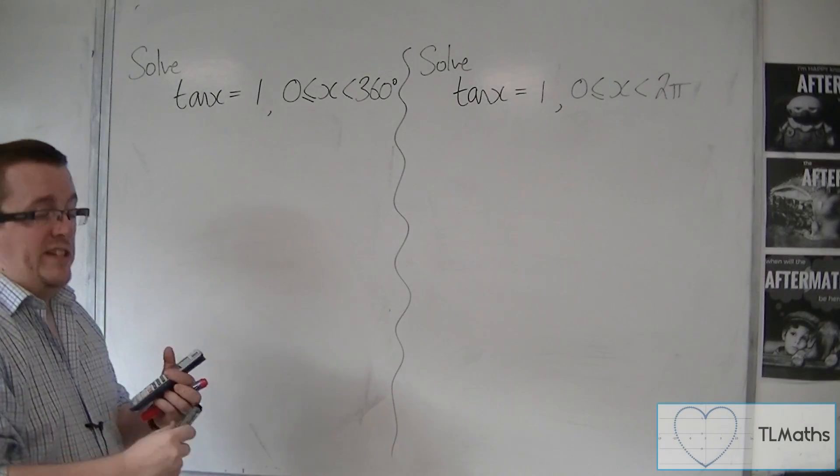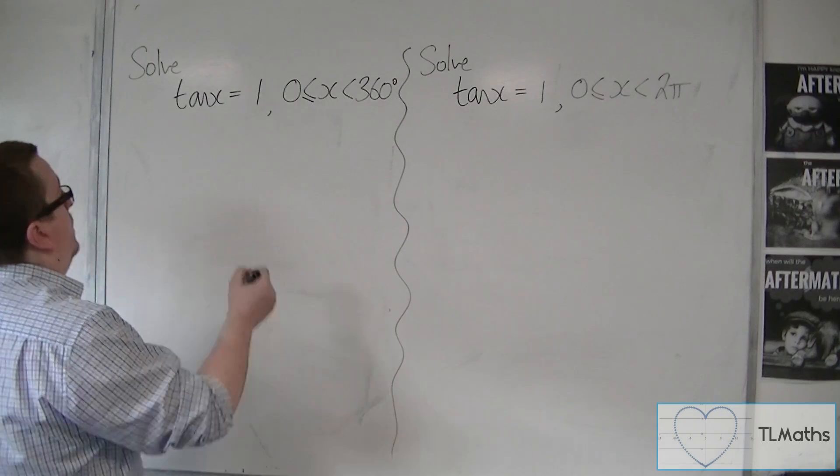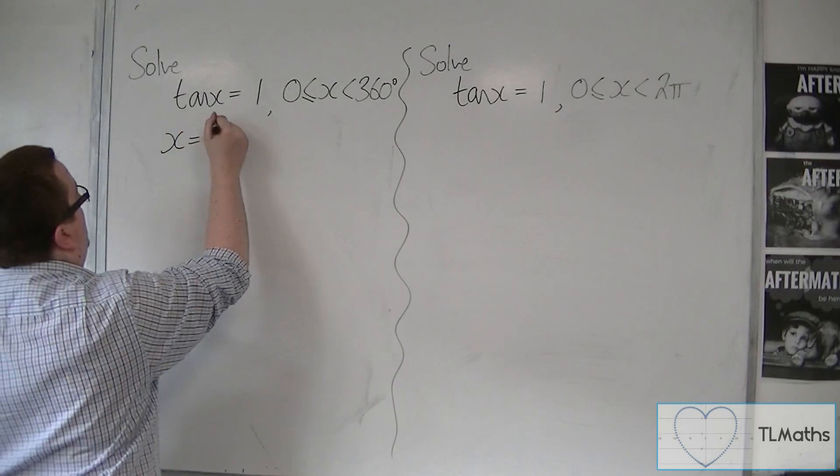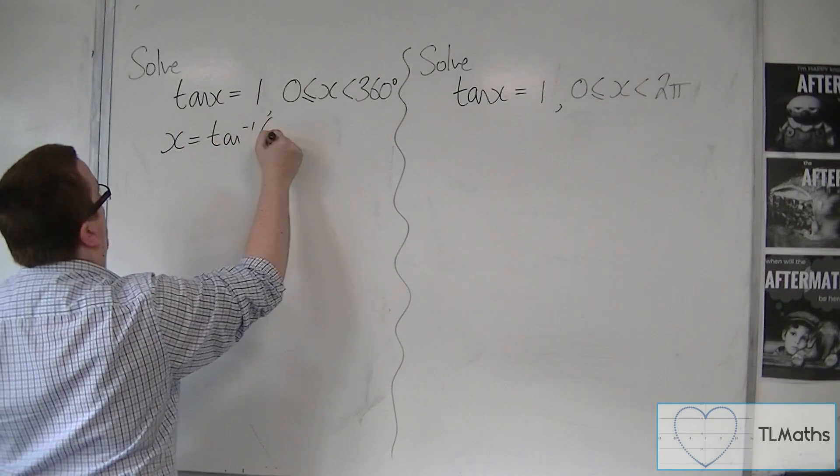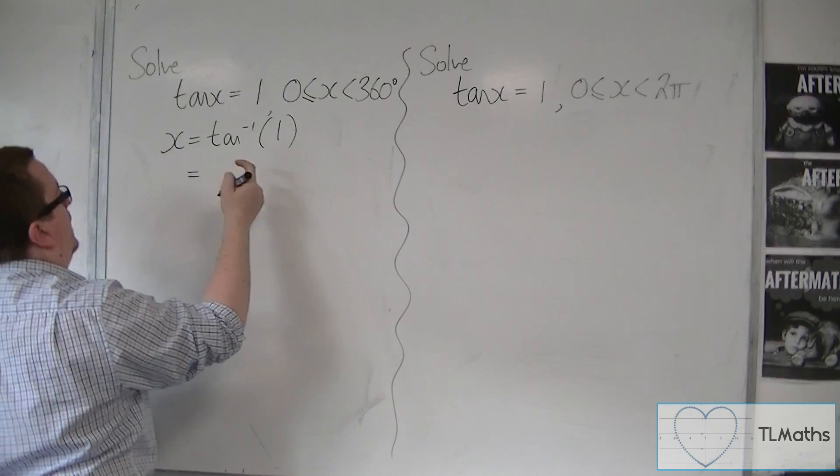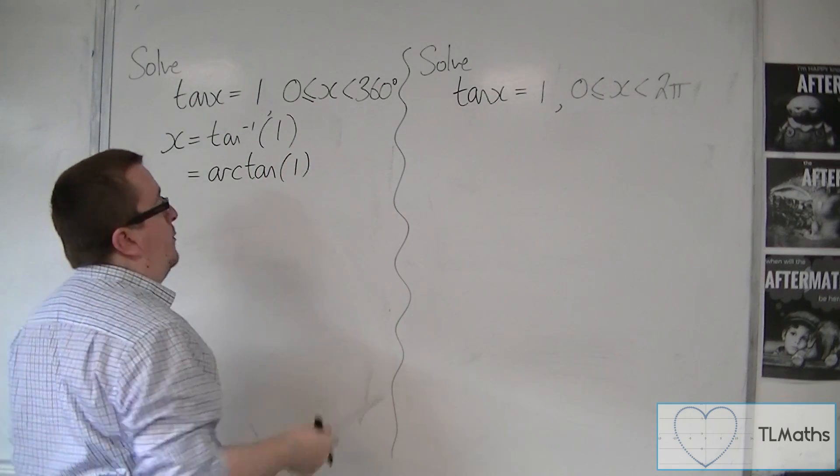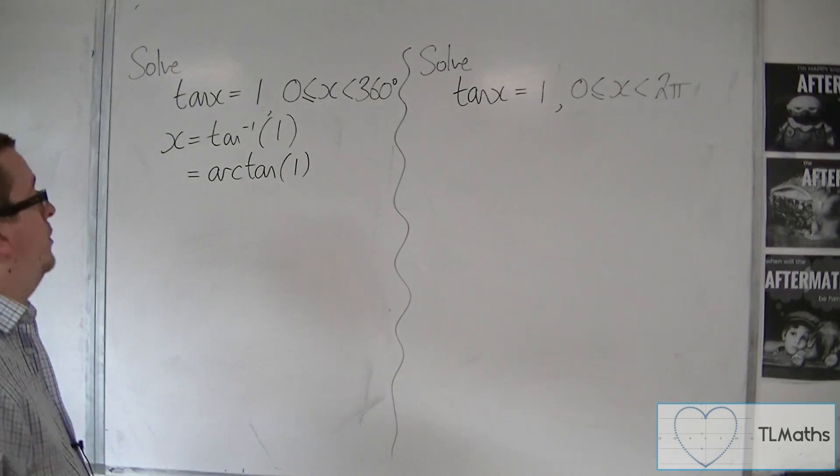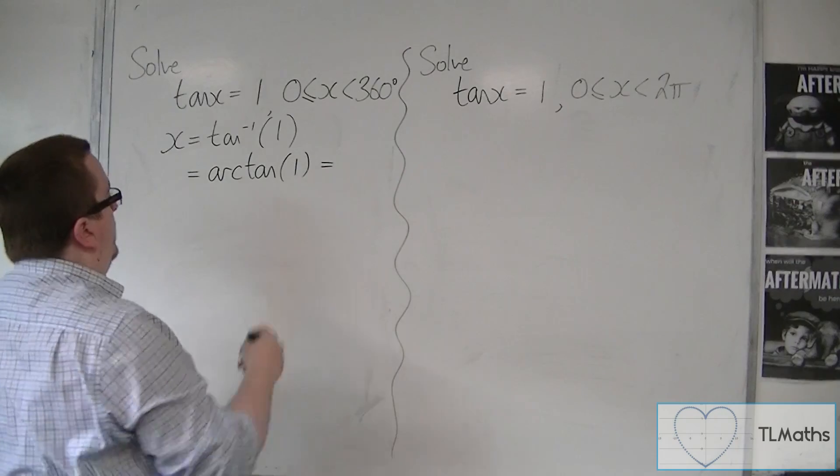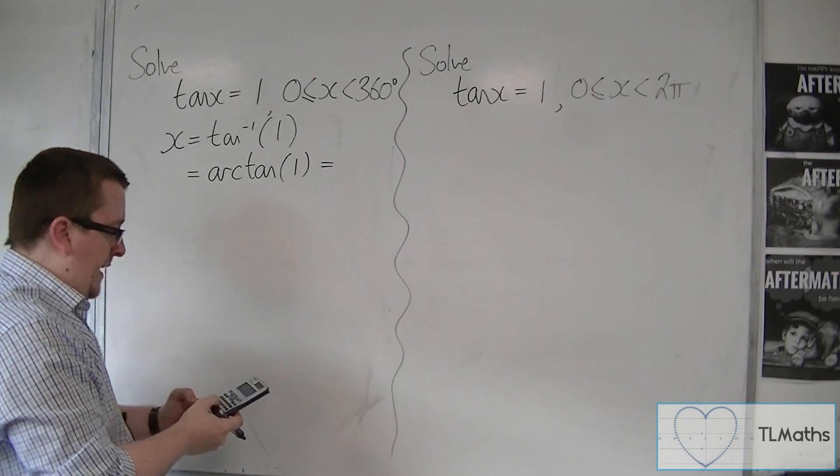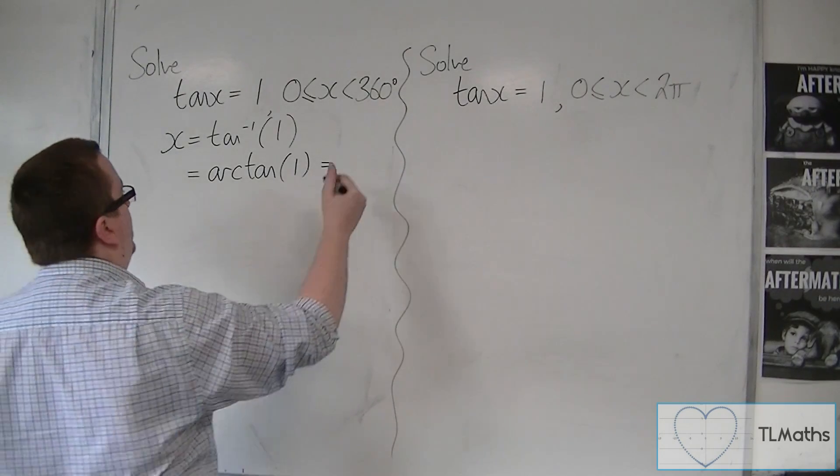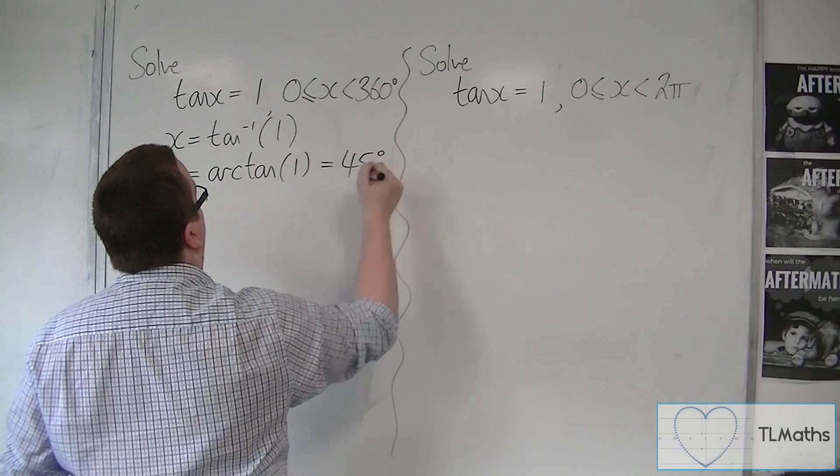So we start off in much the same way. We can write that x is the inverse of tan of one, and we can write that also as arc tan of one, much like we had arc sine and arc cos. So the inverse tan of one is 45, so 45 degrees.